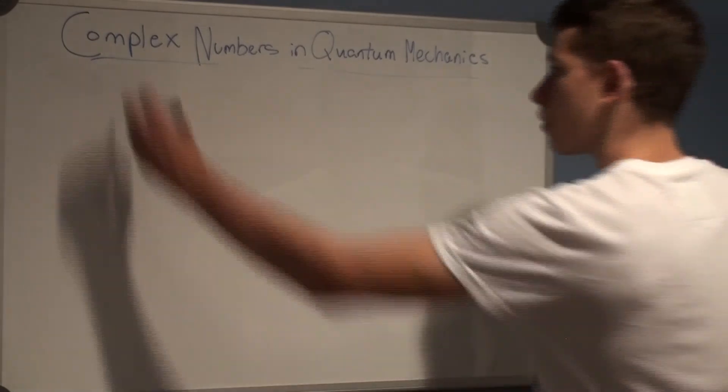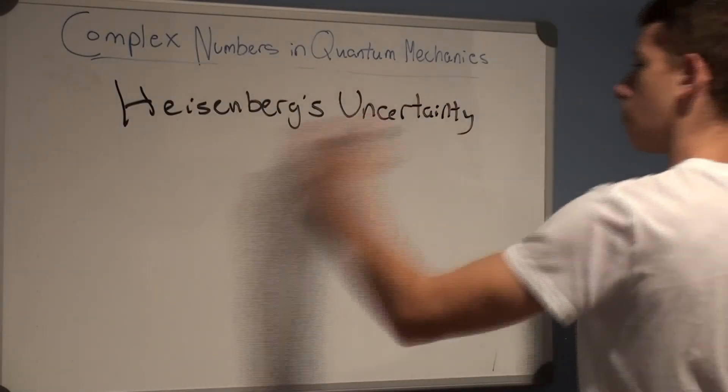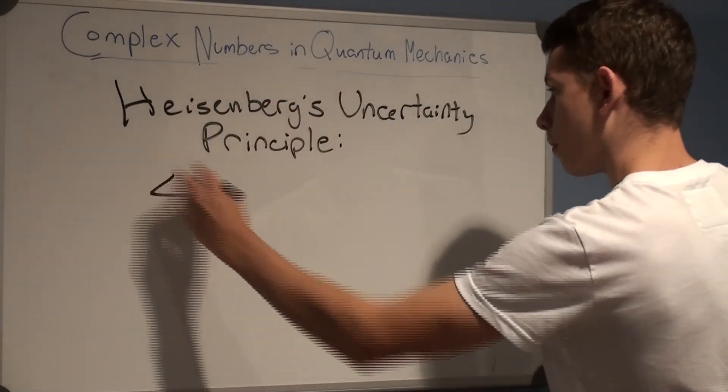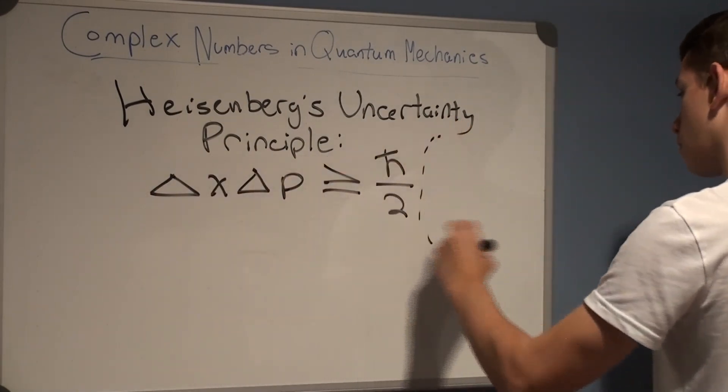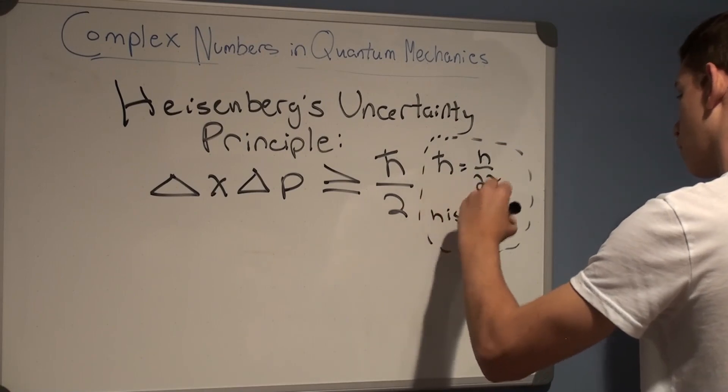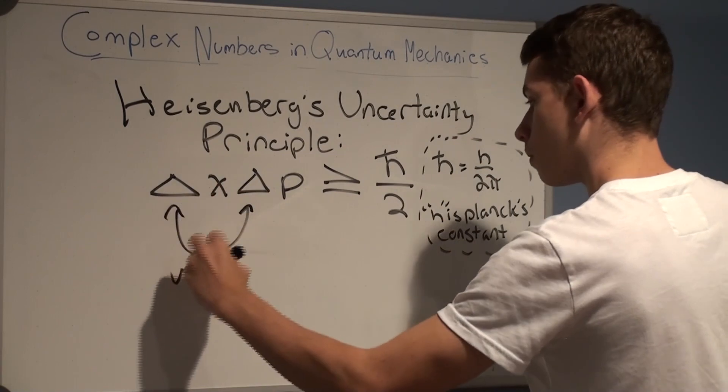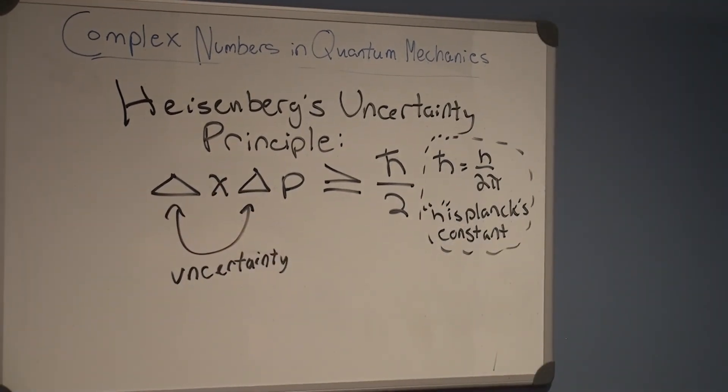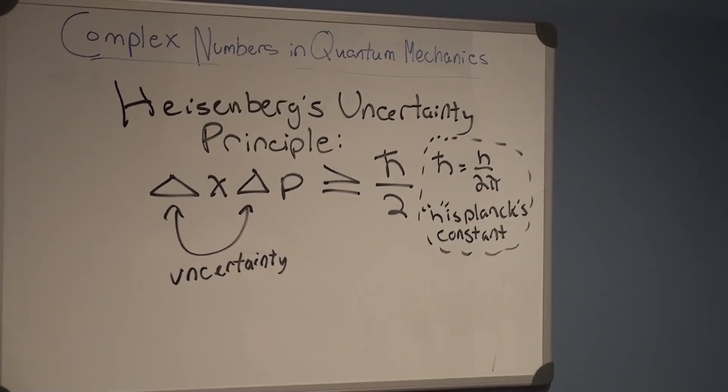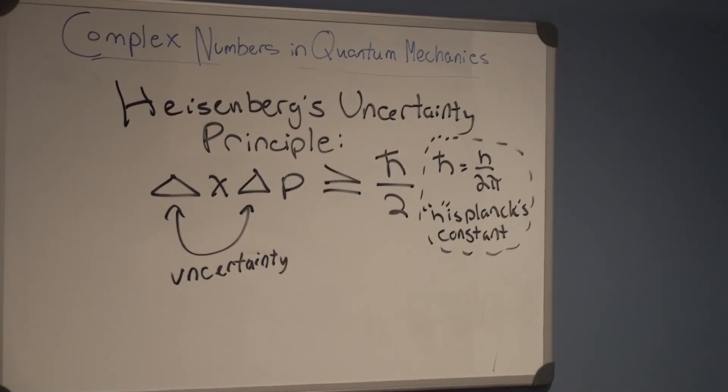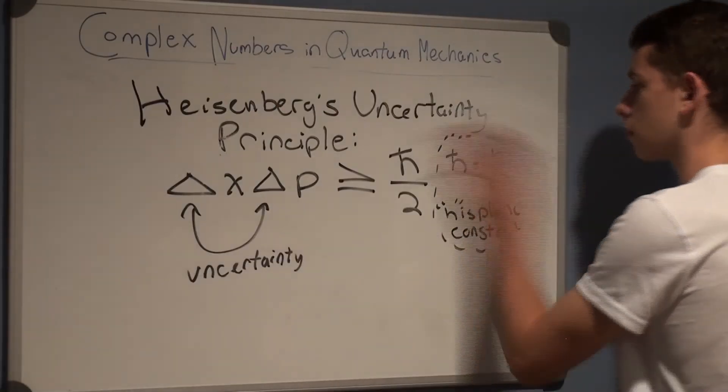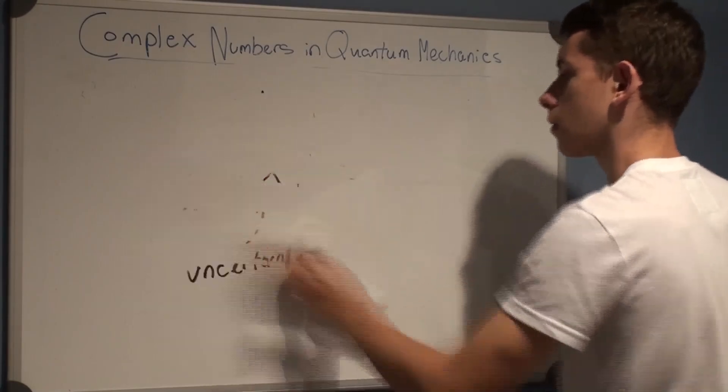On the left hand side, we have delta x multiplied by delta p, while delta x and p are values for uncertainty of position and momentum respectively. We have that this quantity is greater than or equal to a constant, h-bar, the reduced Planck constant, which is commonly used in wave mechanics, divided by 2. What this model allows us to see is that the more we know about position, the less we can know about momentum and vice versa, creating an inverse relationship.